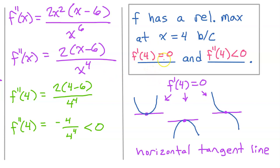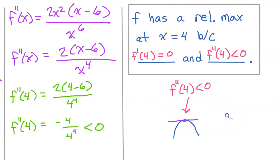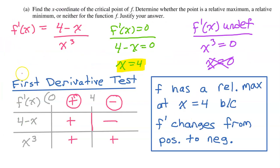For the justification using the second derivative test, it has two parts. f has a relative maximum at x equals four because: first, f prime at four equals zero, meaning there is a horizontal tangent line at four; and second, f double prime at four is less than zero. The second derivative tells us the function is concave down at that point, allowing us to conclude we have a relative maximum at x equals four. For this problem, the first derivative test was much easier.